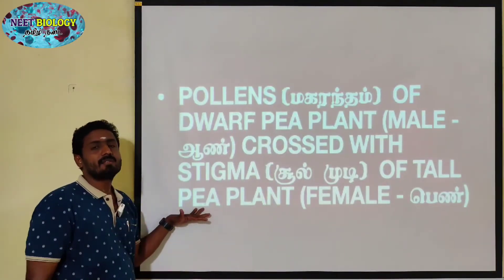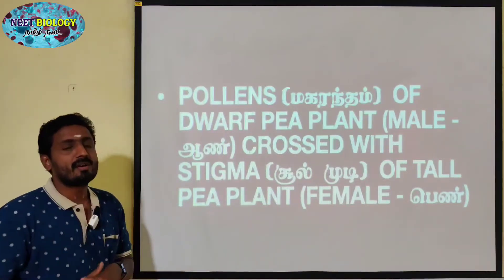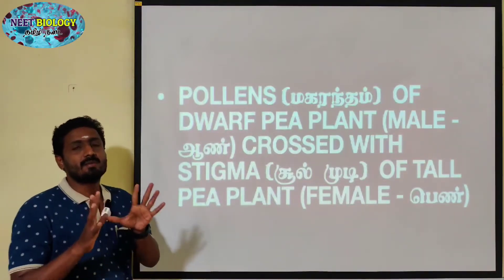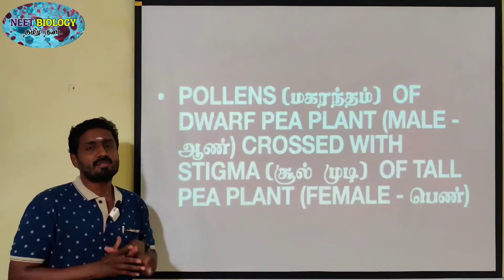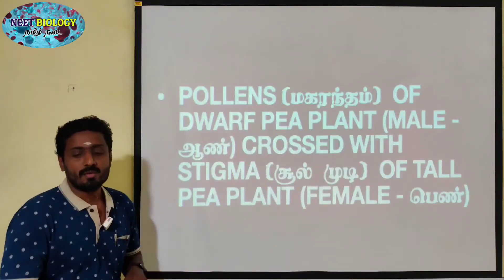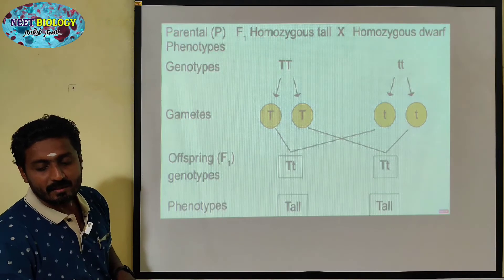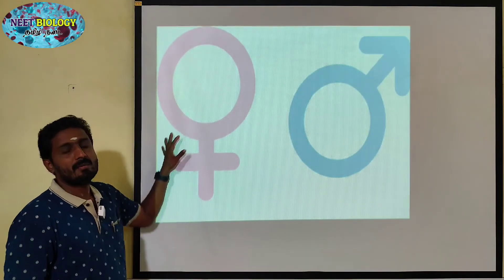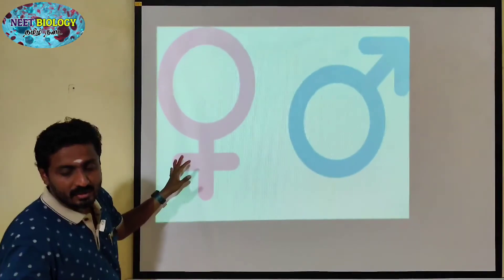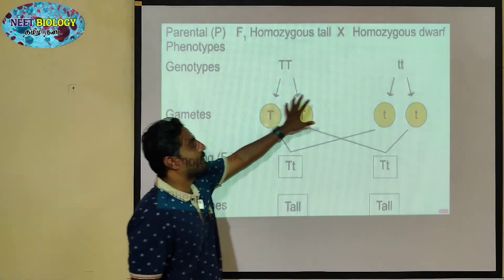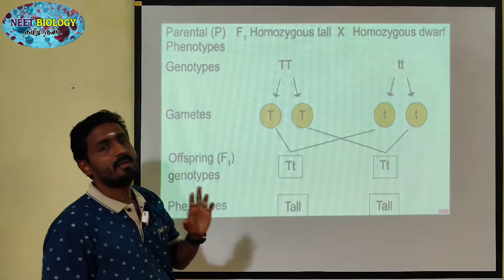The tall pea plant is the female plant in that experiment. If you consider the result, it is 3 is to 1 phenotypic ratio and 1 is to 2 is to 1 genotypic ratio. The first cross is the monohybrid cross, and this is its diagram.